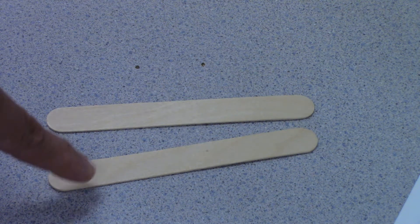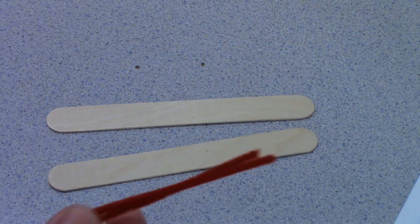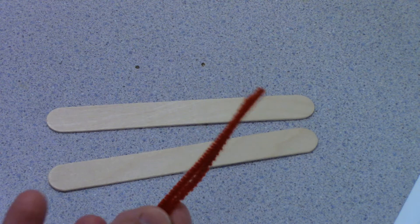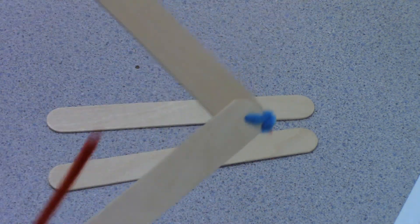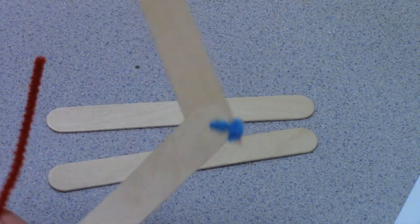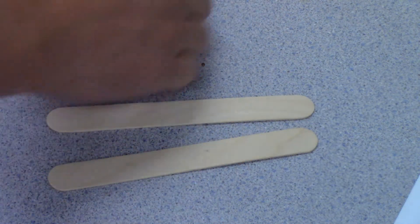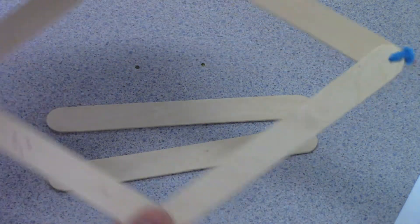So what I did was I drilled holes in the tips of them and then used chenille sticks or pipe cleaners, whatever you want to call these, to twist tie them together. And I figured by doing this we could do all sorts of stuff.